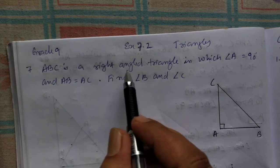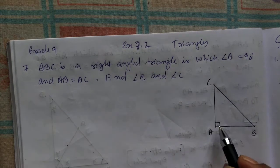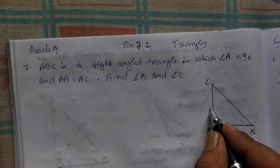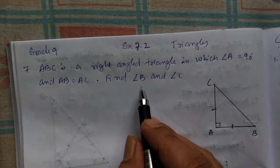Question number 7. ABC is a right angle triangle in which angle A is 90 and these two sides are same. We're going to find angle B and angle C.